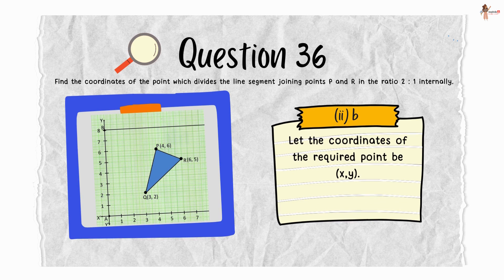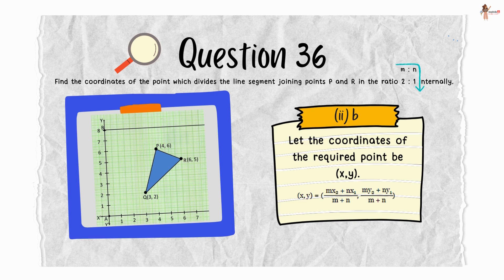Let the coordinates of the required point be (x,y). So the coordinates would be given by the formula: mx₂ plus nx₁ upon m plus n is the x coordinate, and my₂ plus ny₁ upon m plus n would be the y coordinate.